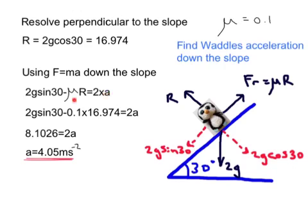So that's μR there. And that's all equal to mass times acceleration. And all I've done here is μ is 0.1 and R is 16.974. Put them in. I've worked that out, taking away what that is from it, remembering BIDMAS, and then I divide the answer by 2.